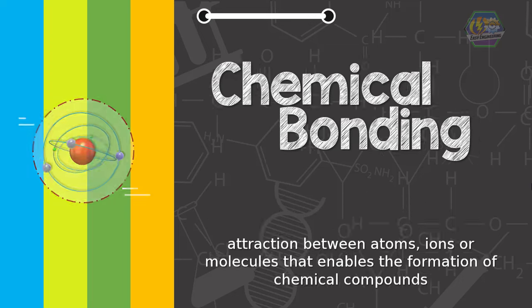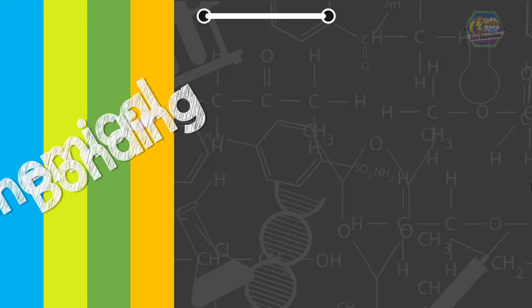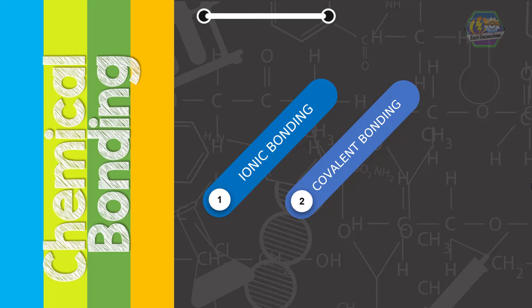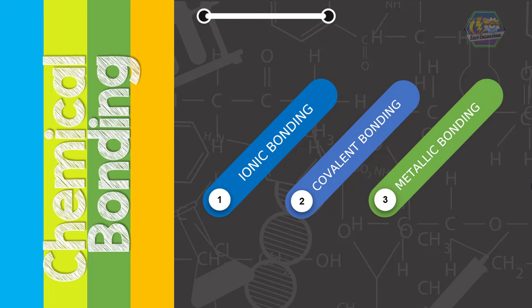There are three common types of chemical bonding. These are ionic bonding, covalent bonding, and metallic bonding.